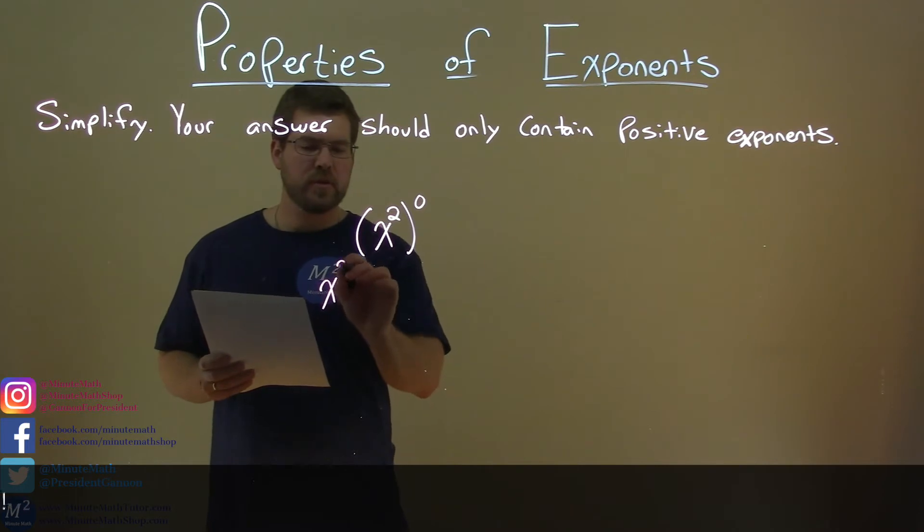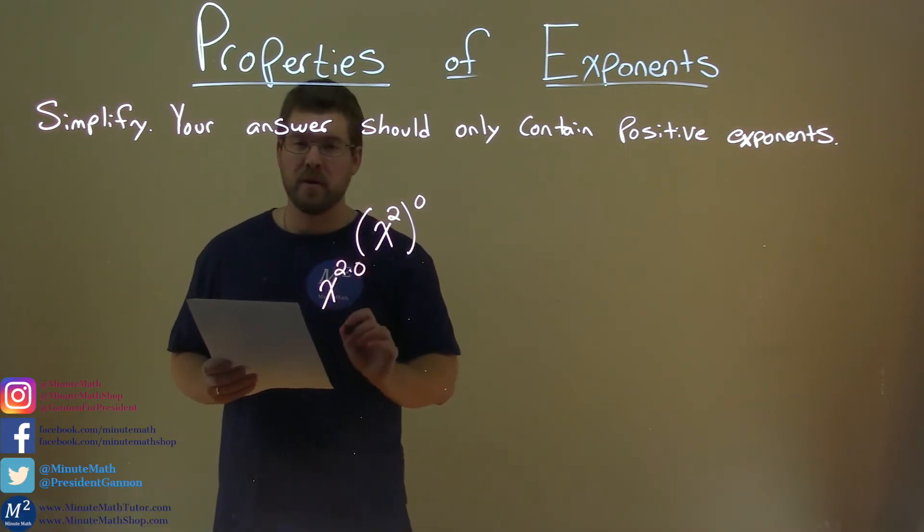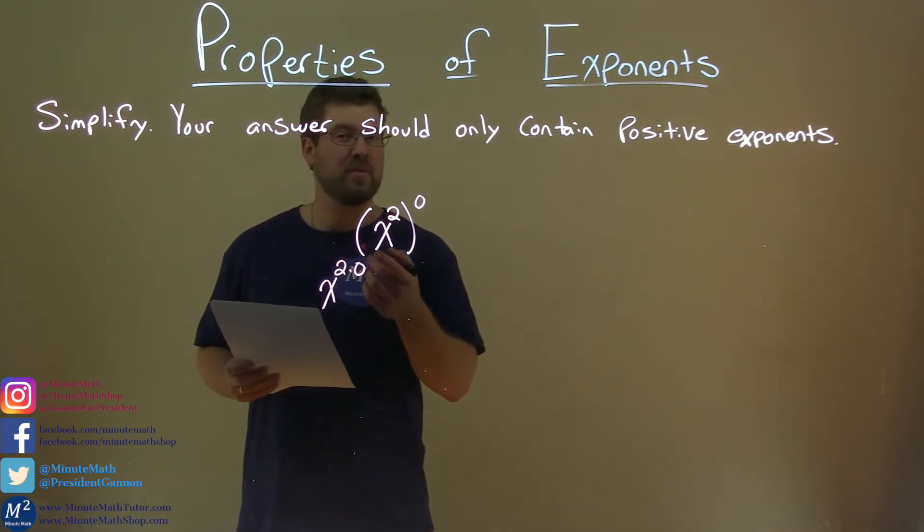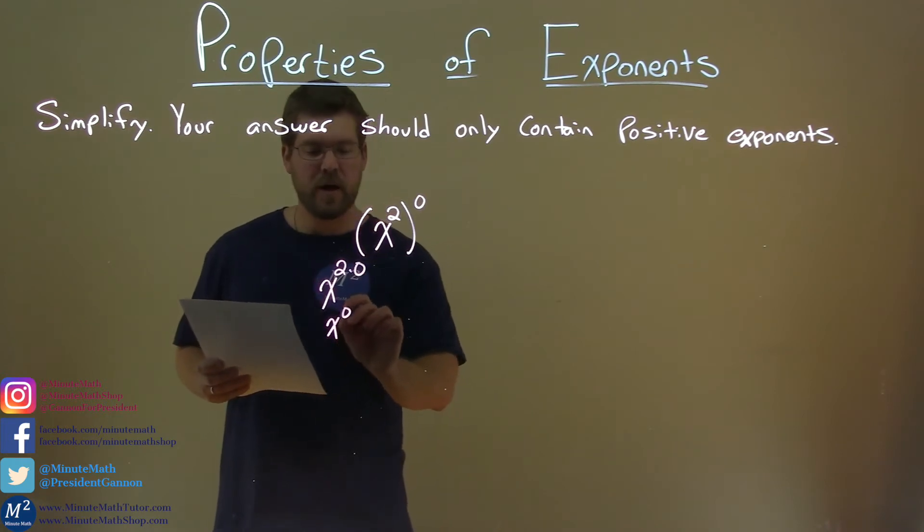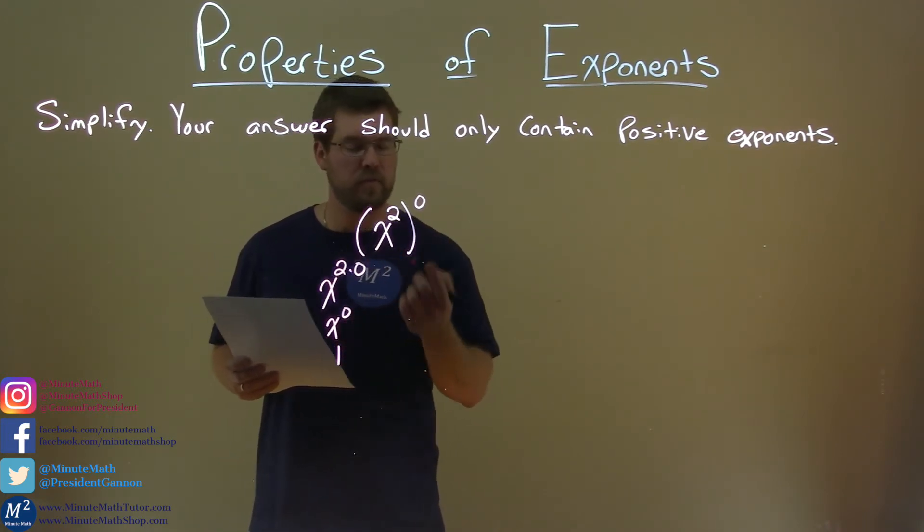We have x to the two now times zero power, which is, well two times zero is zero, so we have x to the zero power, which is one. Anything raised to the zero power is one.